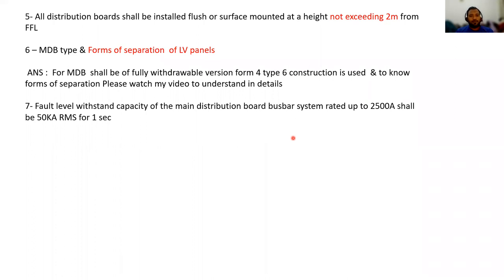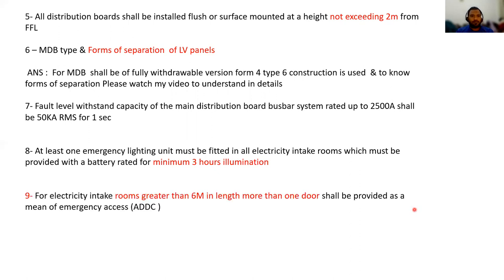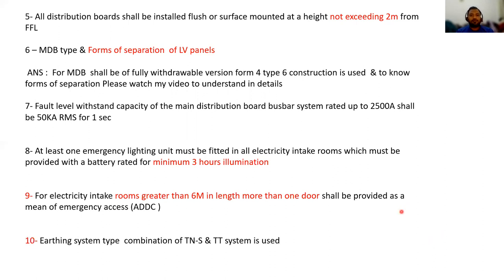Fault level withstand capacity: a main distribution board bus bar system rated up to 2500 amperes shall be 50 kA RMS for one second. At least one emergency lighting unit must be fitted in all electrical intake rooms, provided with a battery rated for a minimum of three hours illumination. Electricity intake rooms greater than 6 meters in length shall have more than one door as a means of emergency access. As per ADDC regulation, the earthing system type is a combination TN-S and TT system.